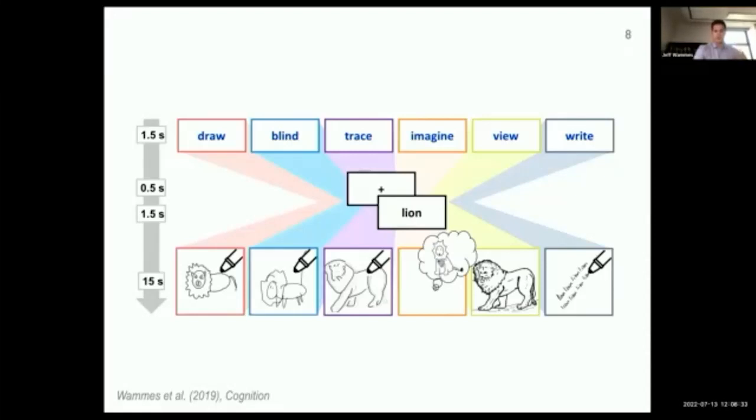We broke it down into three pieces. So you have to think about what your internal representation of a lion looks like, some sort of elaborative thinking. Then you have to actually put the pen to page and use your motor system to generate the strokes. And then you're left with this visual representation. So those are at least three components of the drawing process.